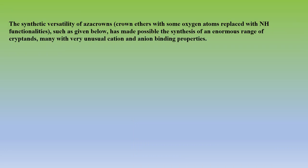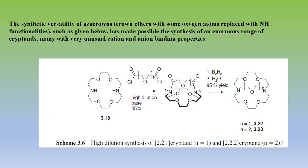Aza-crowns, in which the oxygen atom is replaced by nitrogen, can also be used to prepare cryptands. Using aza-crown ethers with high dilution synthesis, macro bicyclic cryptand structures can be prepared. These cryptands from aza-crowns have unusual cation and anion binding properties, meaning they can bind both cations and anions.